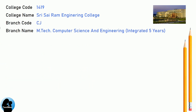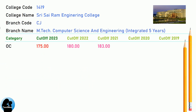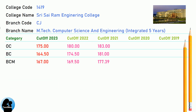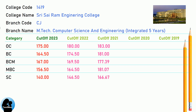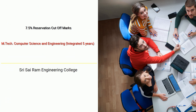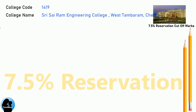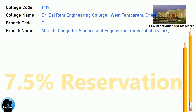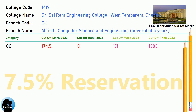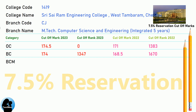DNA Cut-off for Shri Sairam Engineering College in M.Tech Computer Science and Engineering Integrated 5 years. DNA 7.5 Reservation Cut-off for Shri Sairam Engineering College in M.Tech Computer Science and Engineering Integrated 5 years.